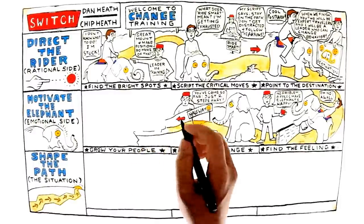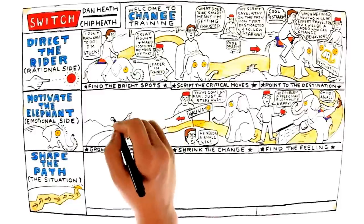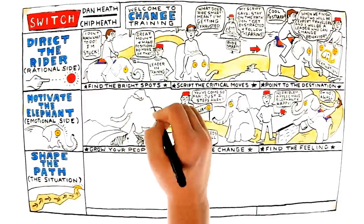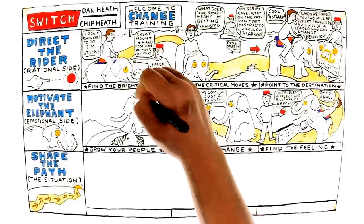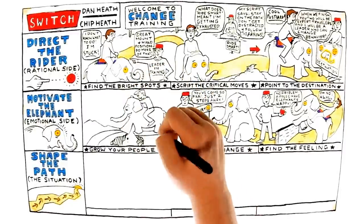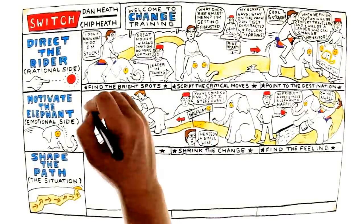Grow your people. The elephant must believe it is capable of making the change. The Heath Brothers talk about a growth mindset versus a fixed mindset. With a fixed mindset, people believe their abilities are basically static or stay the same. They avoid challenges and fear people will see them as a failure.